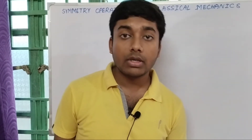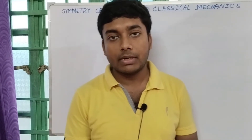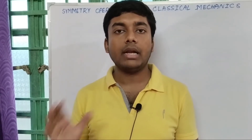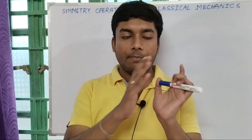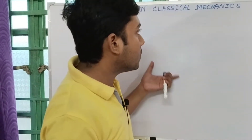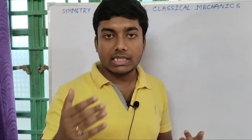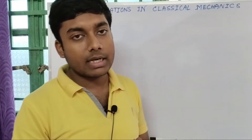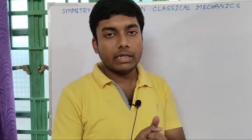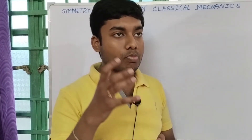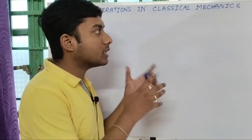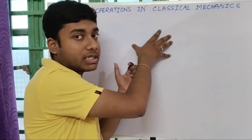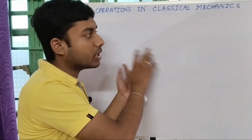In continuous symmetry, there are three types: time translation, space translation, and rotation in space. The other type, discrete symmetry, has two different types: mirror symmetry and time reversal symmetry. In today's video, I will focus on the three types of continuous symmetry — time translation, space translation, and space rotation.